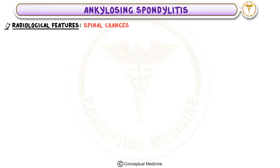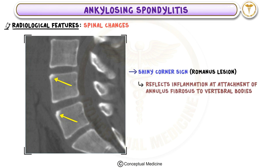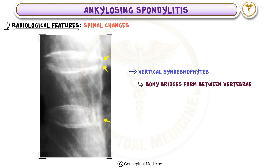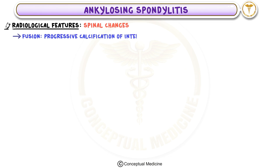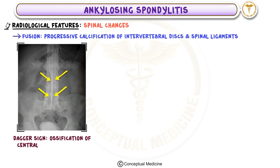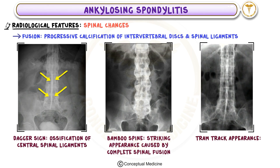Spinal changes in AS include the shiny corner sign and Romanus lesion, reflecting inflammation at the attachment of the annulus fibrosus to the vertebral bodies. Vertical syndesmophytes — bony ridges that form between vertebrae — restrict movement. Progressive calcification of intervertebral discs and spinal ligaments leads to the dagger sign (ossification of the central spinal ligaments), bamboo spine (a striking appearance caused by complete spinal fusion), and tram track appearance from ossification of facet joints.